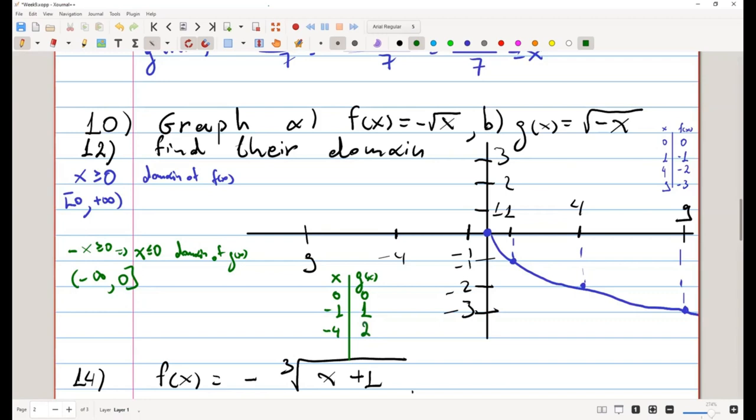And at minus four, it'll become square root of minus minus four, so square root of four, which is two. At minus nine, it'll become square root of nine, so it'll become three. Like those points.